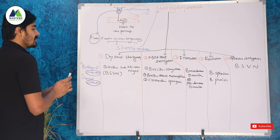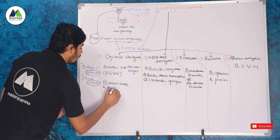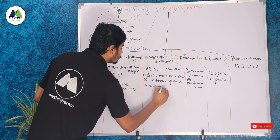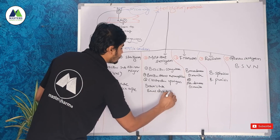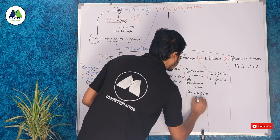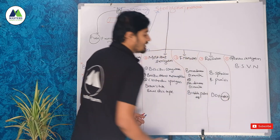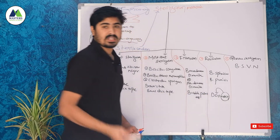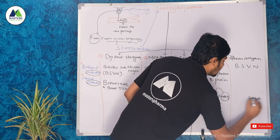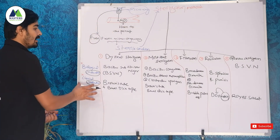The chemical indicator used in dry heat sterilization is the Browne's tube and Bowie-Dick tape. Similarly, for moist heat sterilization we also use Browne's tube and Bowie-Dick tape. The chemical indicator in filtration is the bubble point test. For radiation, it is a dosimeter — which measures radiation in doses. For gaseous sterilization, we use Royce sachets.